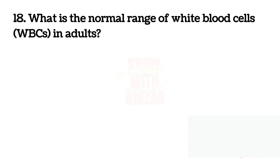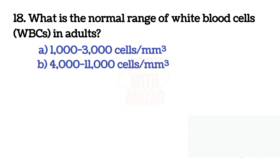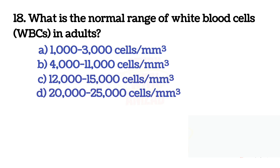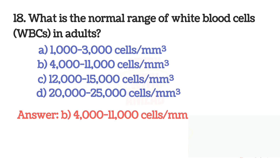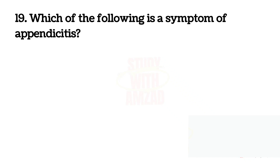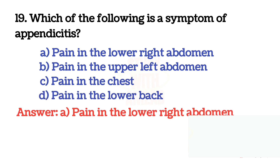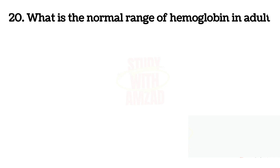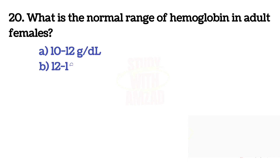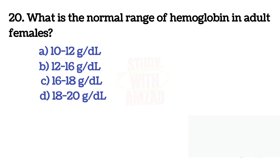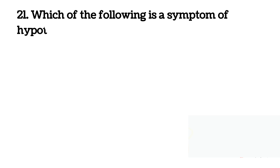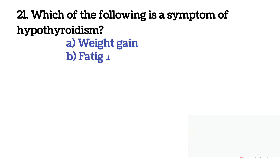Next question: What is the normal range of white blood cells in adults? Next question: What is the normal range of hemoglobin in adult females? The correct answer is B: 12 to 16 grams per dL.